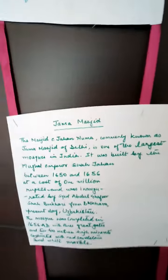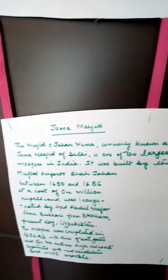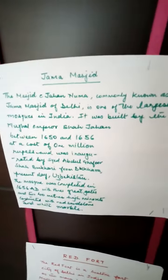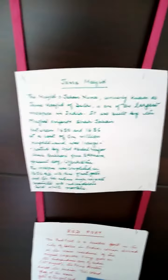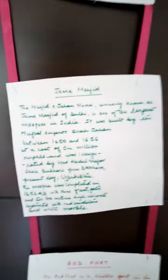Next is Jama Masjid. The Masjid-i-Jahan-Numa, commonly known as Jama Masjid of Delhi, is one of the largest mosques in India. It was built by the Mughal Emperor Shah Jahan between 1650 and 1656 at a cost of 1 million rupees and inaugurated by Syed Abdul Ghafur Shah Bukhani from Bukhara, present-day Uzbekistan. The mosque was completed in 1656 AD with three great gates and two 40-meter-high minarets constructed with sandstone and white marble.